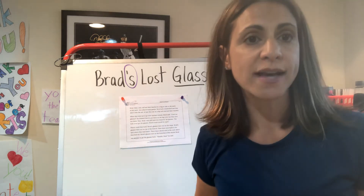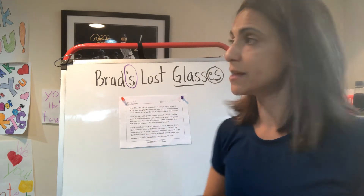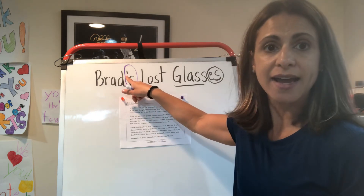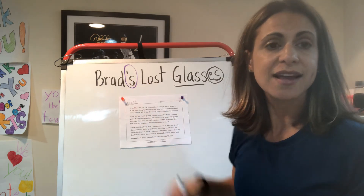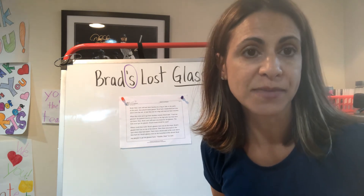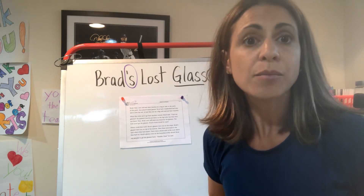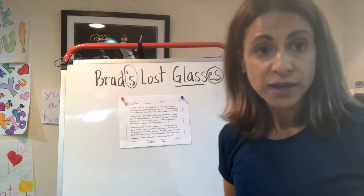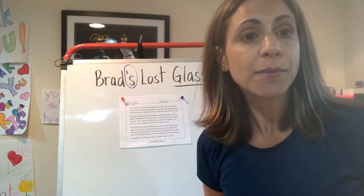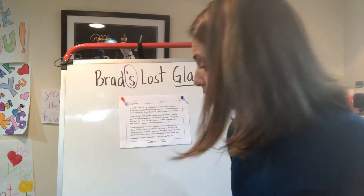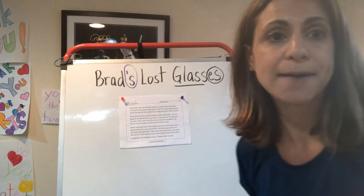So just so you are aware, when you see that little symbol — it's usually up high, and then you write your S — an apostrophe S means possession, when something belongs to somebody. Okay, Brad's Lost Glasses. I'm going to read the story to you first, and then you're going to practice reading it on your own and drawing your picture and coloring it when we're done.